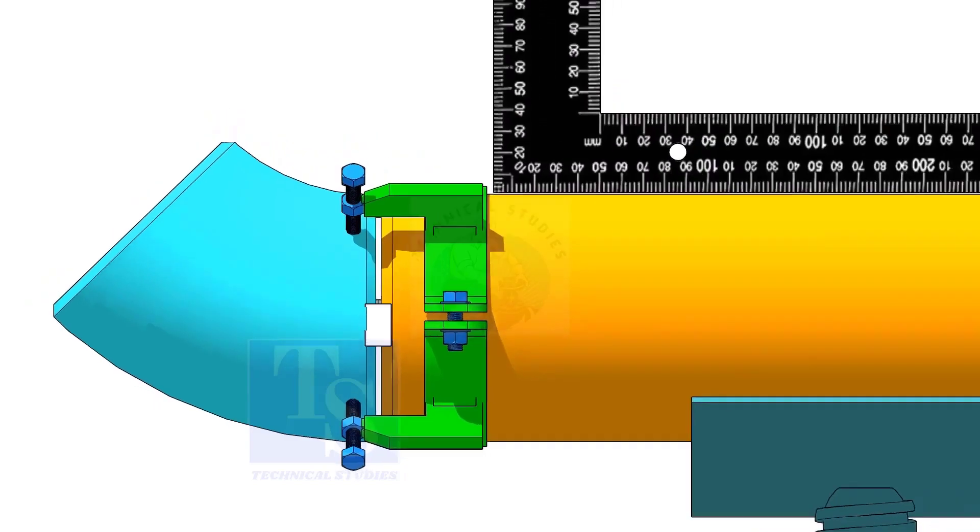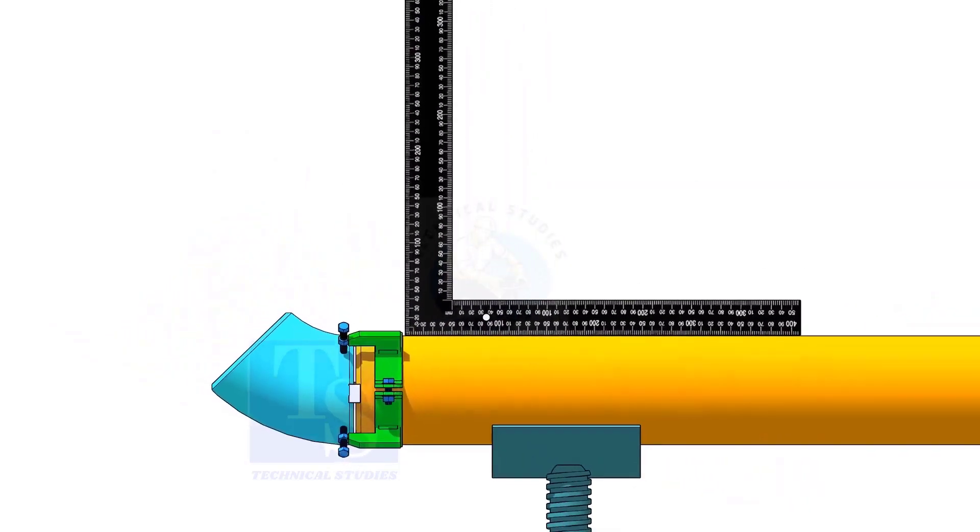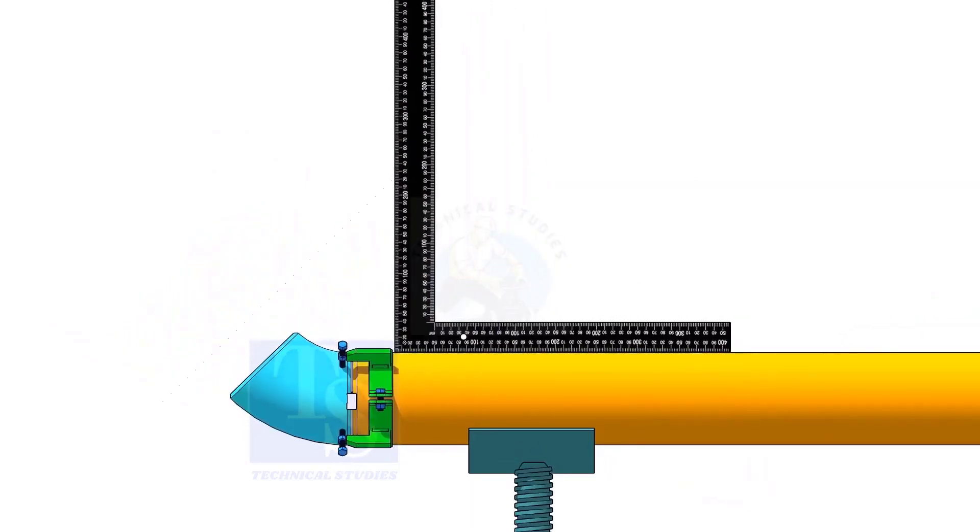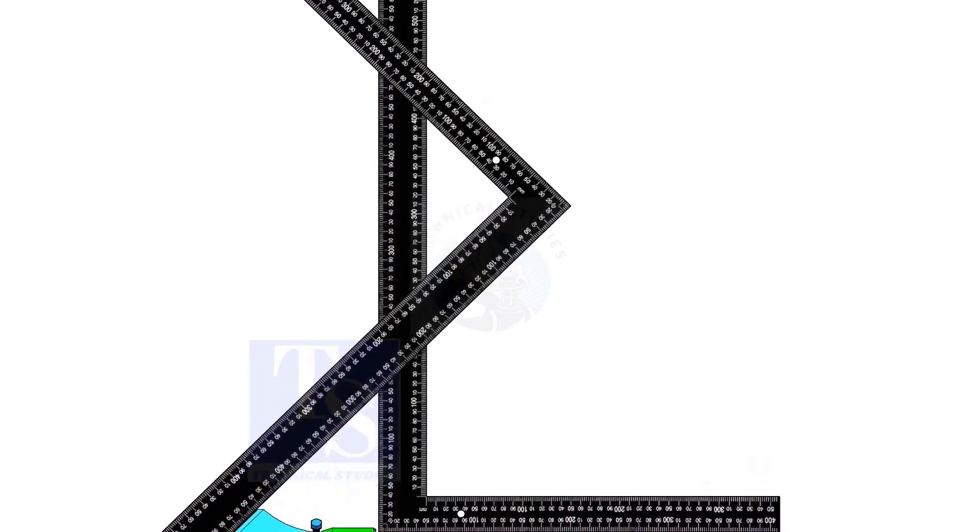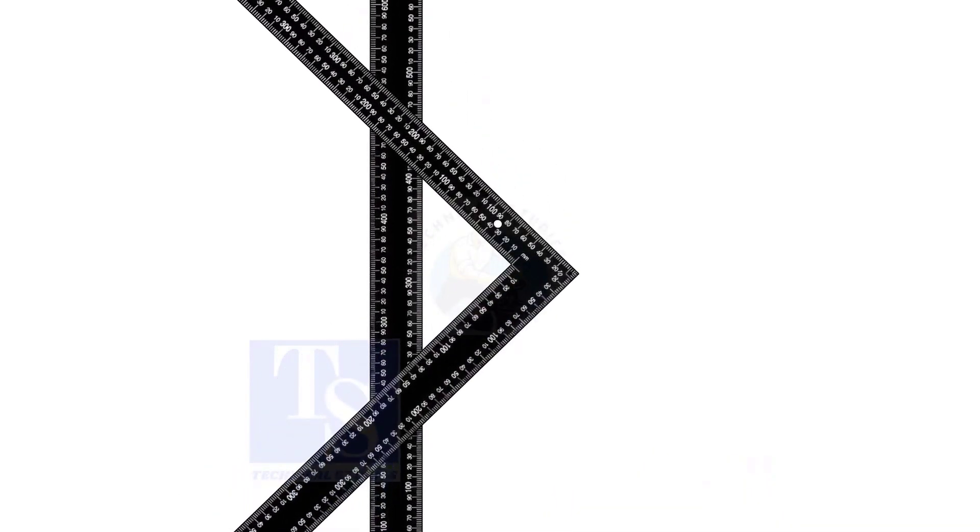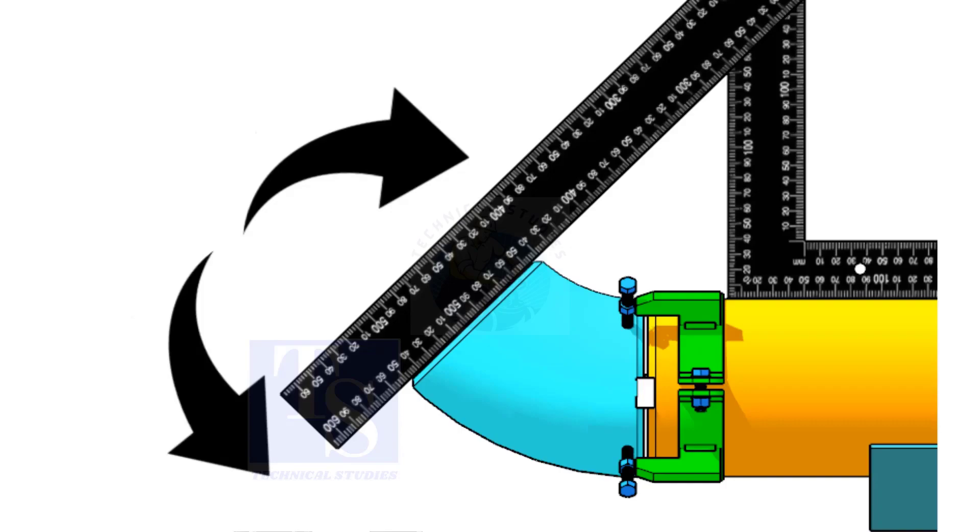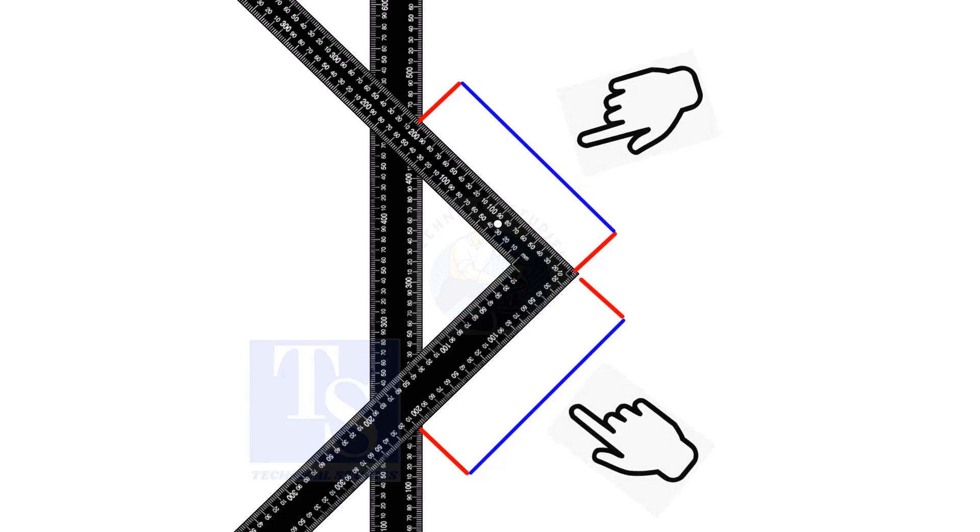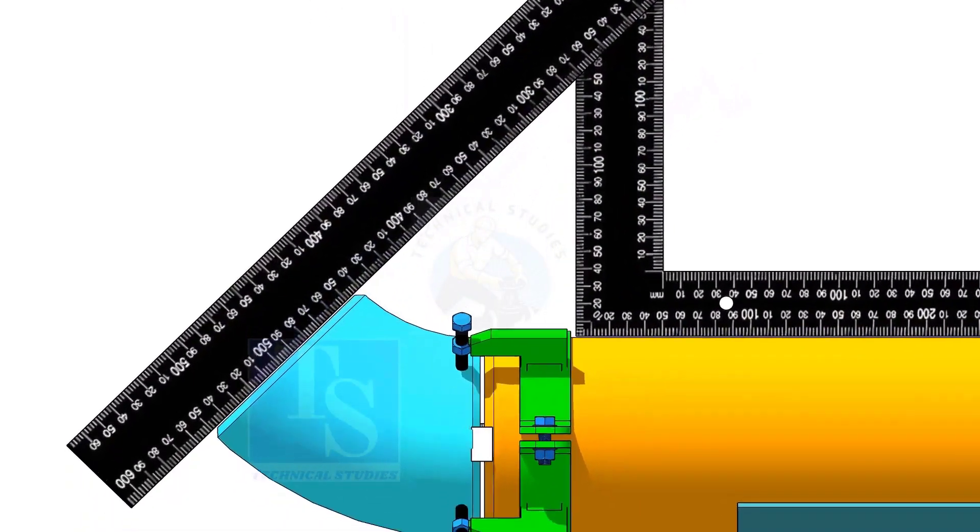Hold a large right angle on the top of the pipe. Hold another right angle on the face of the elbow, as shown. If required, rotate the elbow to make the distance equal. Tack weld on the top and bottom of the joint.